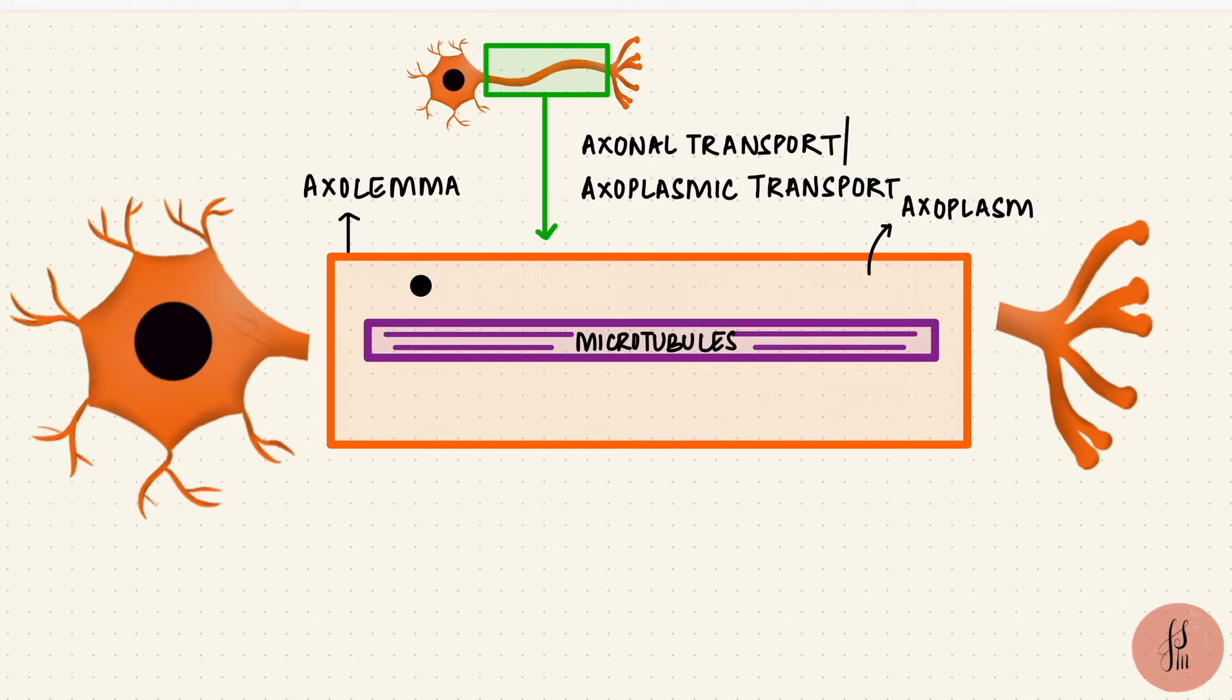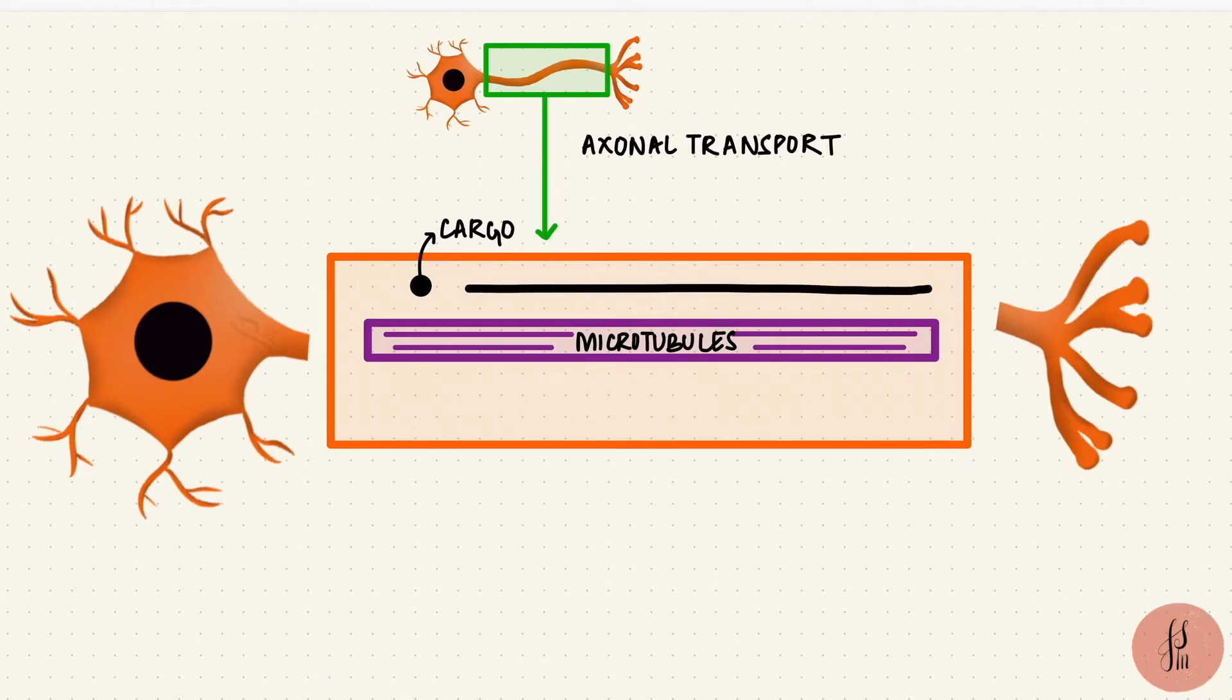What gets transported, well, it's called cargo, and that could include different things. It could be proteins, it could be vesicles, it could be organelles. But the point is this cargo could be transported in either direction. It could move down towards the terminal, or some things might get transported the other way, from the terminal towards the cell body, like damaged organelles going towards the lysosome.